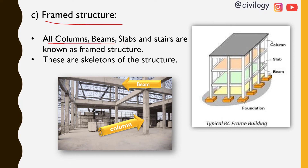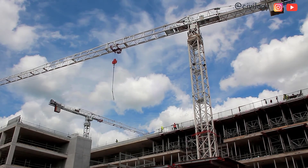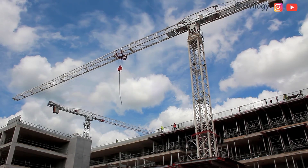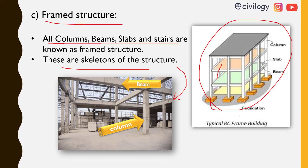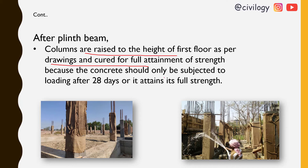In the framed structure stage, all columns, beams, slabs, and stairs are known as the framed structure — these are the skeleton of the structure. In the picture you can see beams, columns, slabs, and footings. After the plinth beams, columns are raised to the height of the first floor as per drawings and cured for full strength.